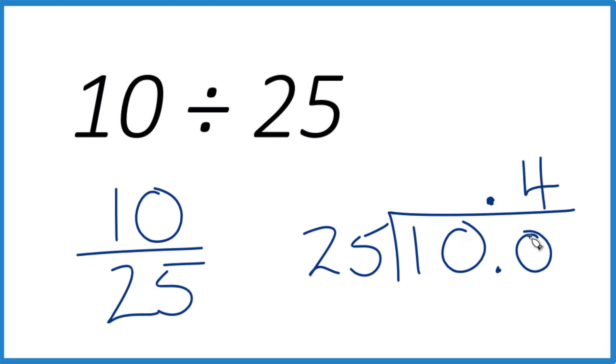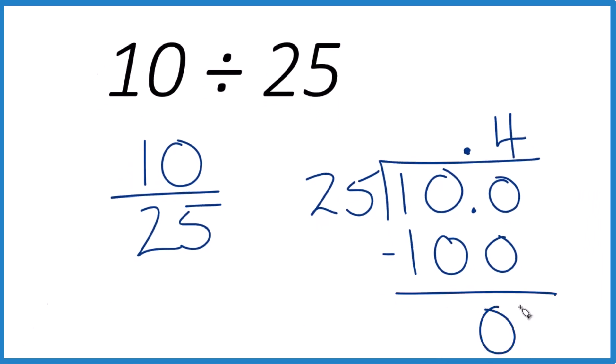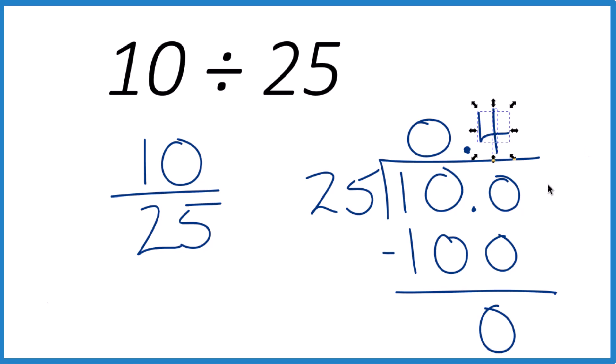Four times 25, that is 100. Subtract, no remainder, and that's it. So 10 divided by 25 is 0.4. Often we'll put a zero out here. Just makes it a little bit clearer. If you multiply 0.4 times 25, you'll get 10.